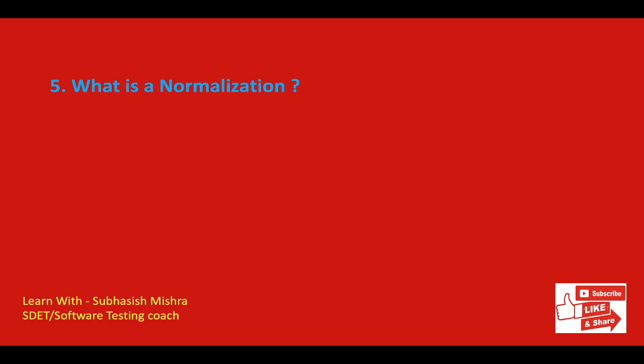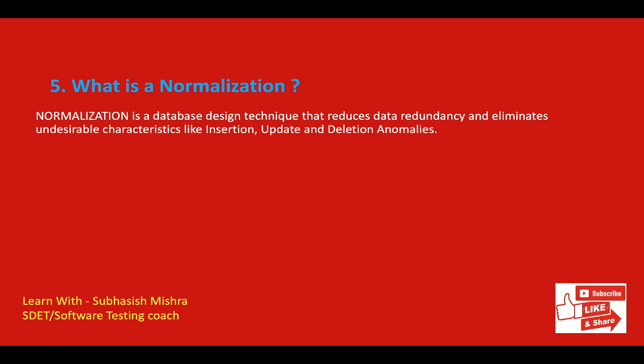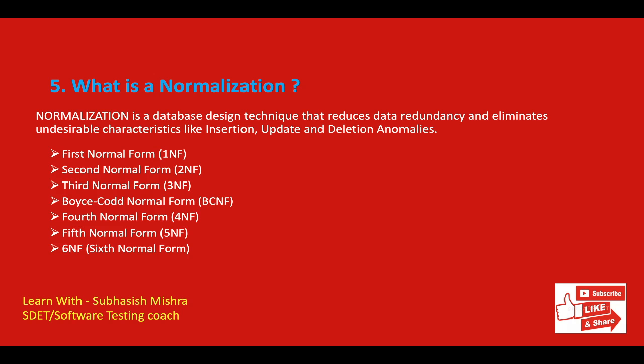What is normalization? Normalization is a database design technique that reduces data redundancy and eliminates undesirable characteristics like insertion, update, and deletion anomalies. Normalization rules divide larger tables into smaller tables and link them using relationships. The purpose of normalization in SQL is to eliminate redundant or repetitive data and ensure that data is sorted logically. The database normalization process is divided into normal forms: First Normal Form (1NF), Second Normal Form (2NF), and so on up to 6NF.